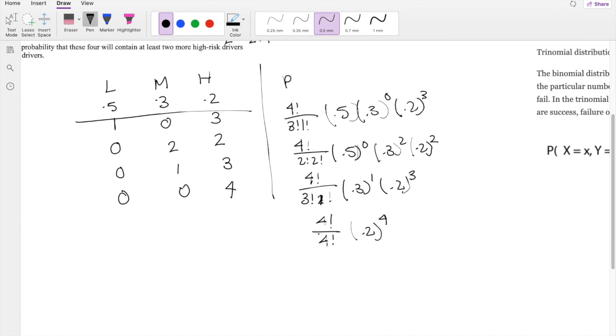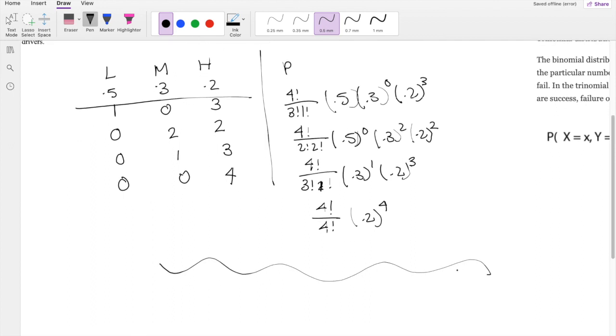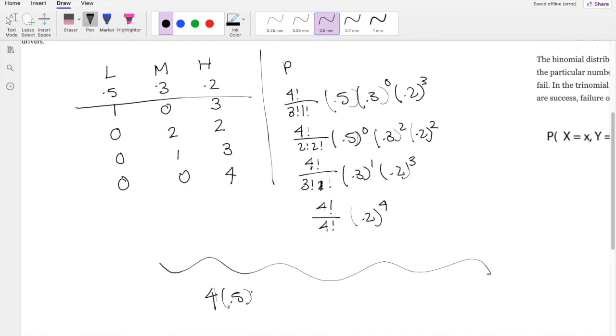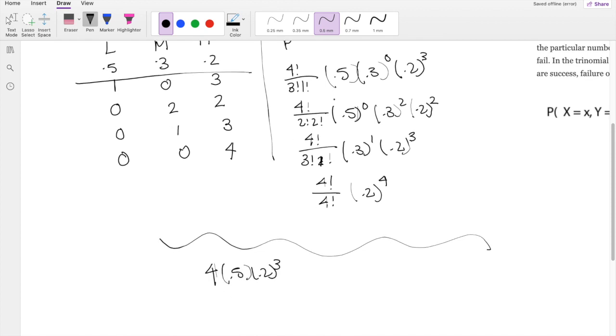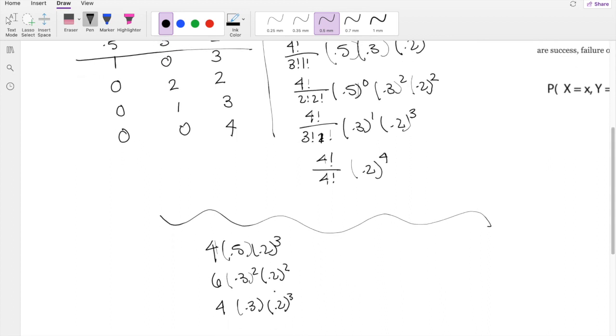So this could be all simplified. Let's just add a little squiggly line in there. 4 factorial over 3 factorial, this is 4, times 0.5 times 0.2 to the cube. 4 factorial over 2 factorial times 2 factorial, that's 6, times 0.3 to the 2 and 0.2 to the 2. This one is 4 factorial over 3 factorial, so that's just 4, times 0.3 to the 1 and 0.2 to the cube. And lastly, 4 factorial over 4 factorial is just 1, so that would just be 0.2 to the 4.